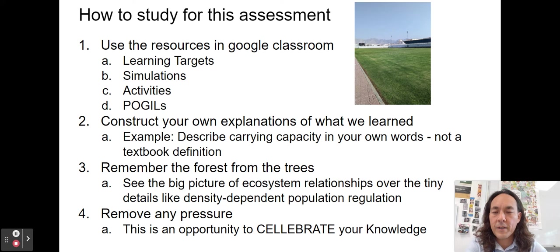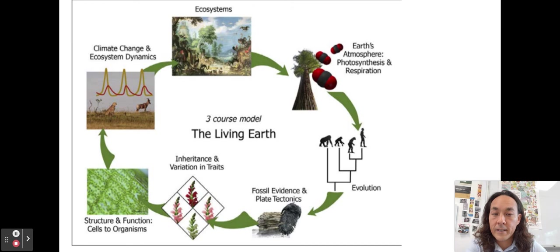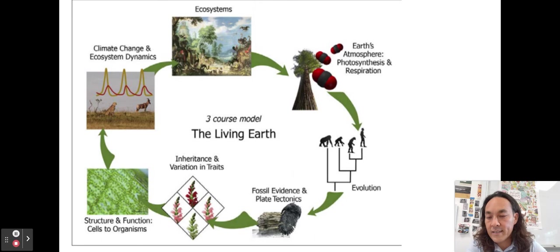Here's an overview of our course — I went over this with your parents at back to school night. We're starting in ecosystems, then we'll go into Earth's atmosphere with photosynthesis and respiration, then evolution. That'll take us to winter break. Then we'll get into fossil evidence, plate tectonics, genetics, cells, organisms, and back to climate change and ecosystems. You'll continue it in chemistry next year with the living Earth through a chemical lens.